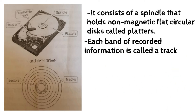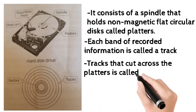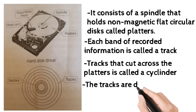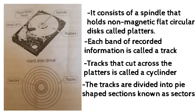The information is recorded in bands; each band of information is called a track. Each platter has the same number of tracks, and a track location that cuts across all the platters is called a cylinder. The tracks are divided into pie-shaped sections known as sectors.